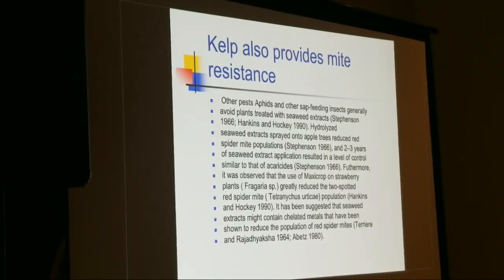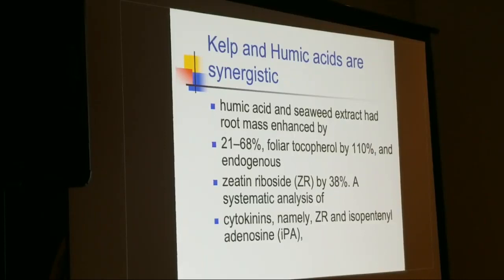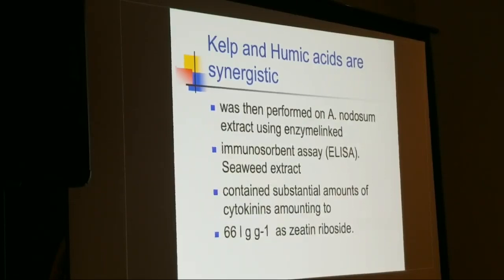Humic acid and kelp are synergistic — they really work together. Humic acid can enhance root mass by 21 to 68 percent. Some of the chemistry involves zeatin riboside and cytokines. These slides were originally used in presentations to scientists at agronomy societies, so they're a bit more academic.